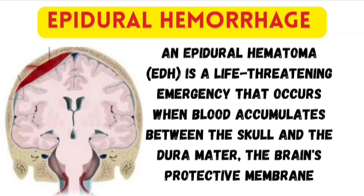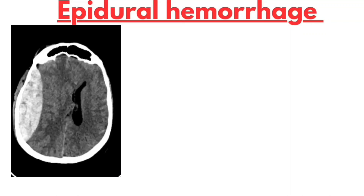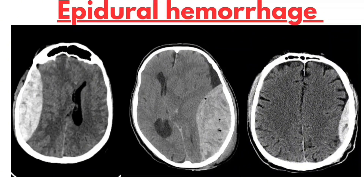Epidural hemorrhage is a life-threatening emergency where blood collects between the skull and dura mater. It usually happens due to head trauma — often from an accident or fall — which causes rupture of an artery, commonly the middle meningeal artery. On CT scan images, notice the lens-shaped or biconvex hyperdense area representing blood between the skull and dura mater. It appears bright on non-contrast CT. This shape is characteristic of EDH and helps differentiate it from other hemorrhage types. It often causes midline shift due to increased pressure, and early recognition is crucial because timely surgical intervention can be life-saving.